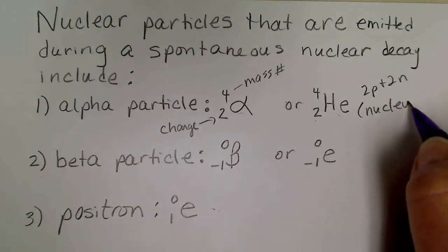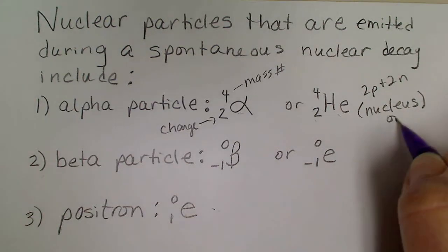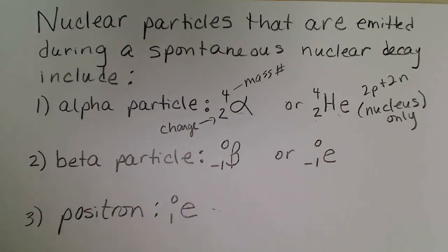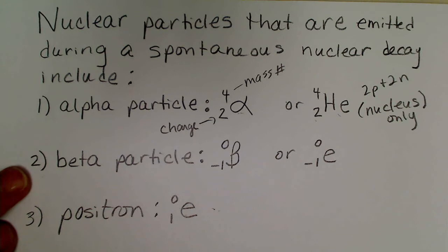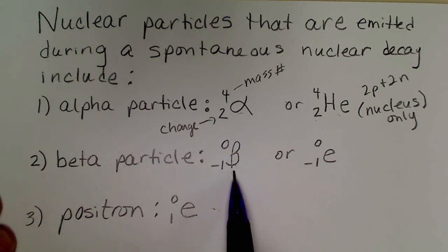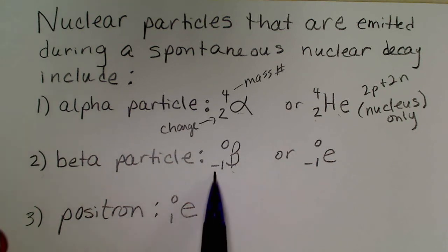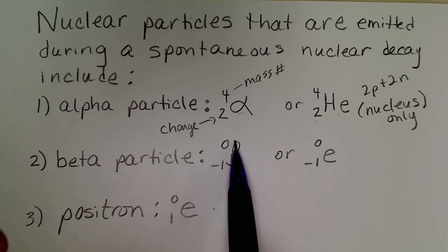Another particle that is emitted is a beta particle. The Greek symbol for beta is that symbol, and a beta particle has a charge of minus 1 and a mass of 0.